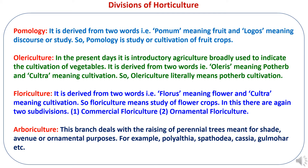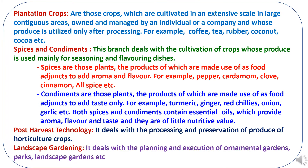Then Arboriculture, which deals with the raising of perennial trees meant for shade, avenue or ornamental purposes, like Polyalthia, Spathodea, Cassia and Gulmohar trees etc. Next division is plantation crops. These are crops cultivated on an extensive scale in large contiguous areas, owned and managed by an individual or a company, whose produce is utilized only after processing.